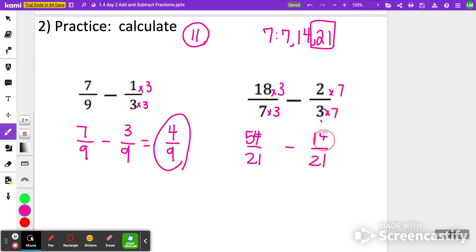And then 3 times 7 will give me that 21. So 2 times 7 is 14. 54 minus 14 is 40, keeping the denominator the same of 21.